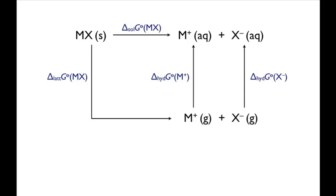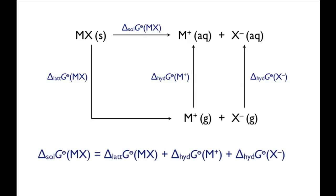Whether an ionic compound MX dissolves in water depends on the relative magnitudes of the lattice Gibbs energy and the Gibbs energy changes of hydration of the ions. If the Gibbs energy of solvation is negative, the compound is soluble, and if it's positive, the compound is insoluble.